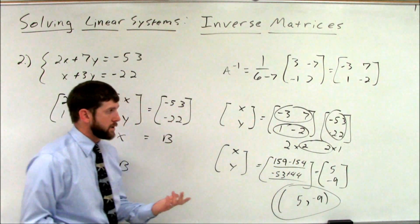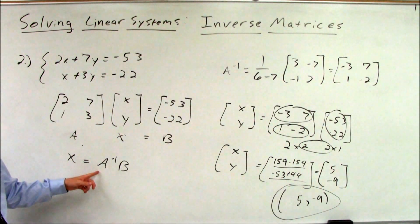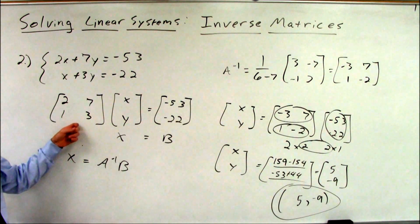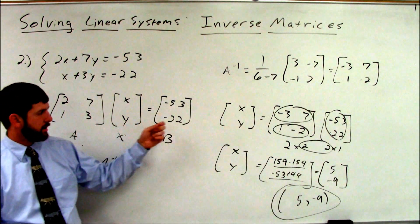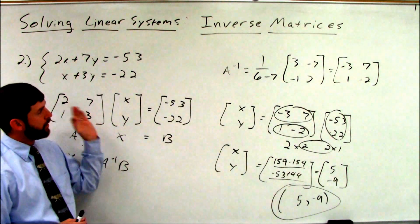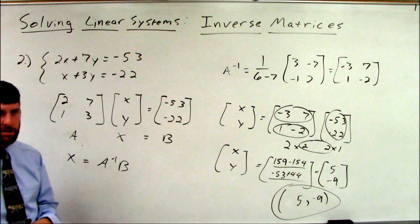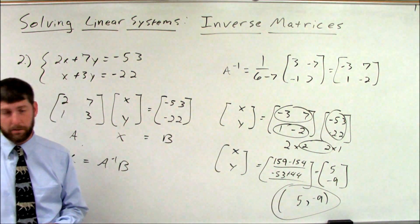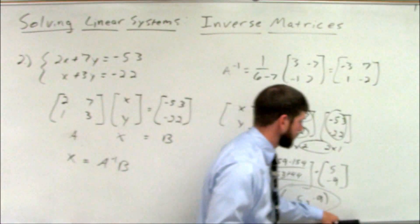So that's the strategy. A inverse times B. Inverse of the coefficient matrix times the constant matrix in that order. Every time, we'll solve your system. And we'll say every time. I don't really mean every time. There's a case I want to look at right now.